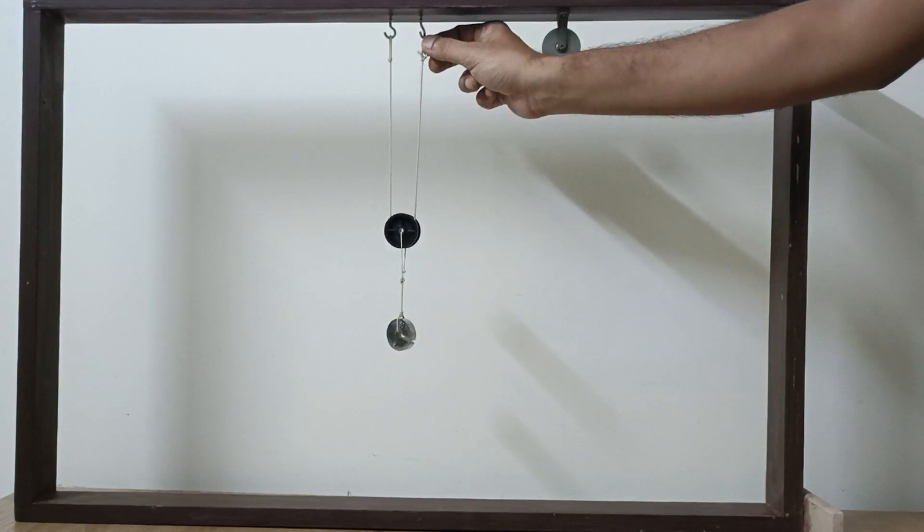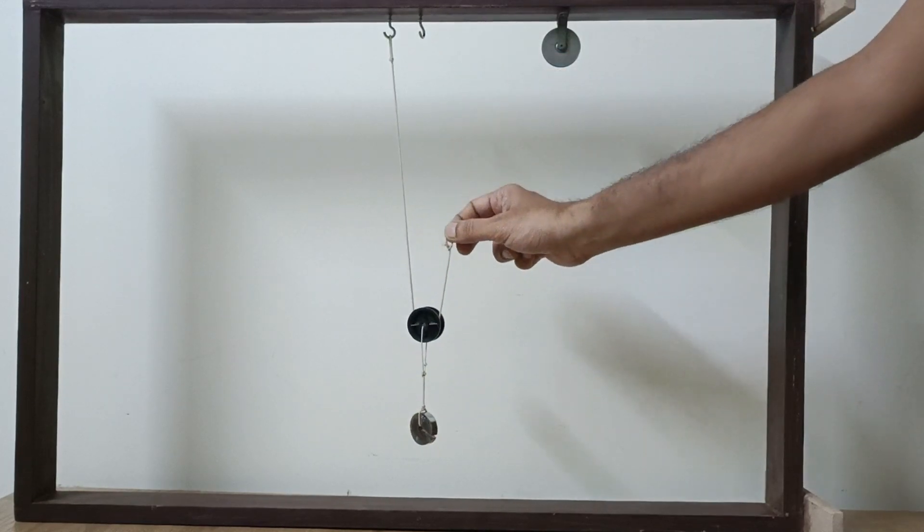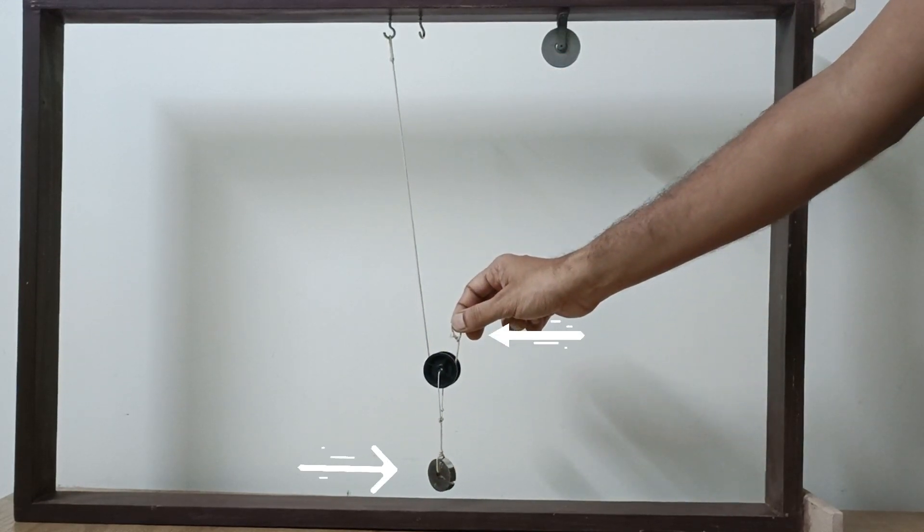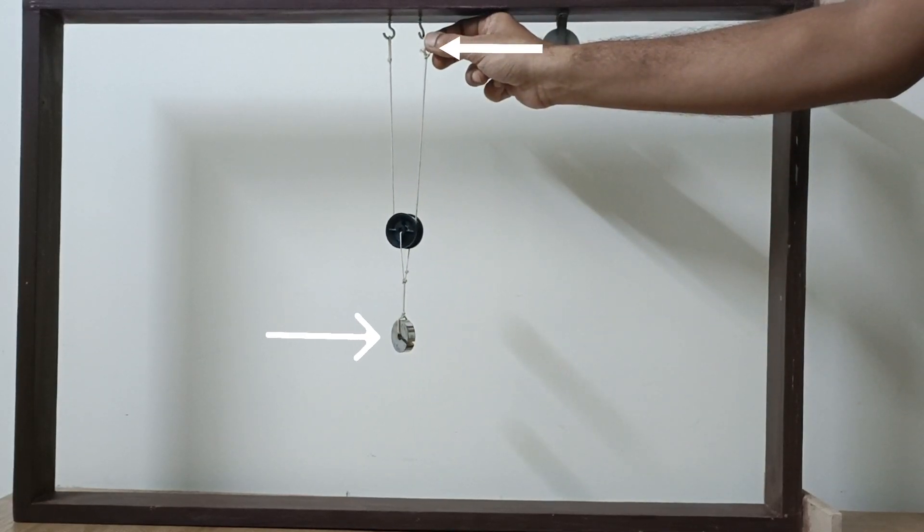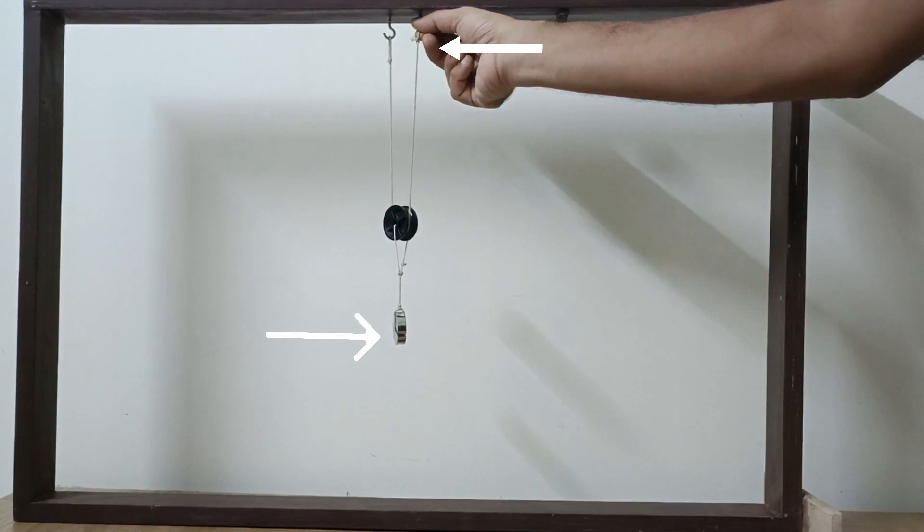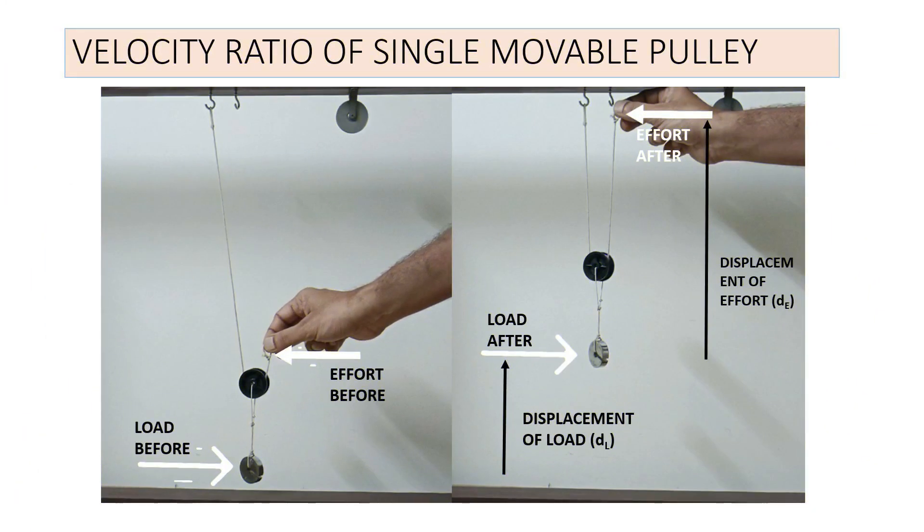Carefully note the movement of load and the effort points. We observe that the displacement of the effort is twice than that of the displacement of the load, which proves that velocity ratio of this single movable pulley is two.